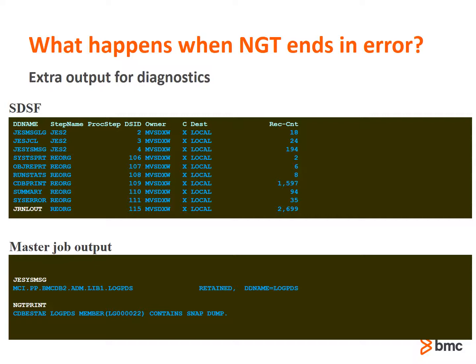The journal output in the VSAM file is automatically echoed back to the job in a dynamically allocated journal-out DD upon failure, and is easy to supply to BMC support without having to rerun. In addition to the journal output, most events will write a mini-dump to a member in the LogPDS dataset. You can find the name of the LogPDS dataset in the JezMessages output, and the member name containing the mini-dump can be found in the NGTPrint output. Having both the journal output and the LogPDS member associated with a failure, BMC support can normally provide a resolution to almost any utility problem without the need of additional runs or SVC dumps.